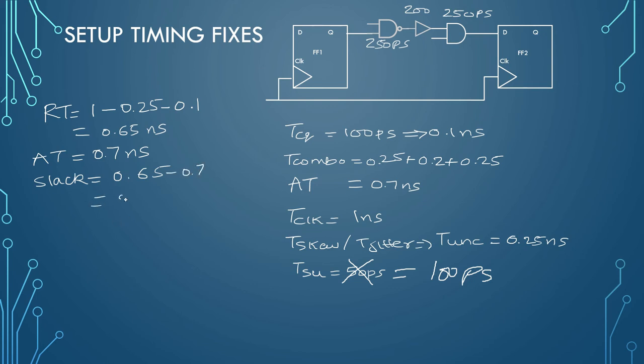So slack would be 0.65 minus 0.7, so that is around minus 50 PS of violation. Your 50 PS is violating.